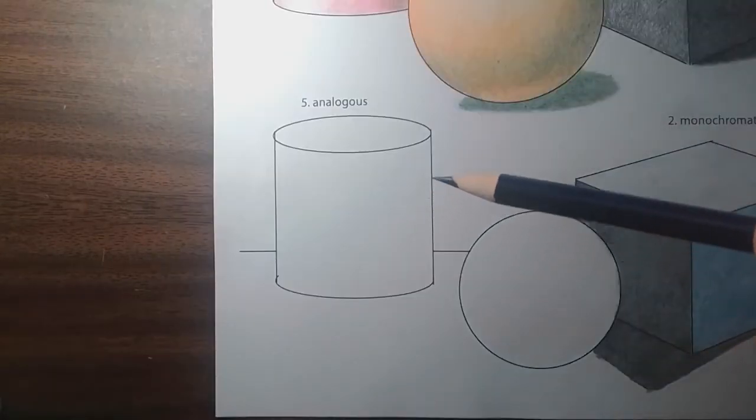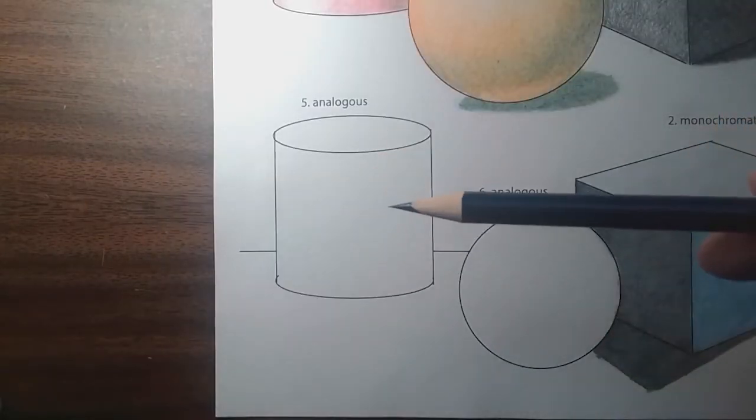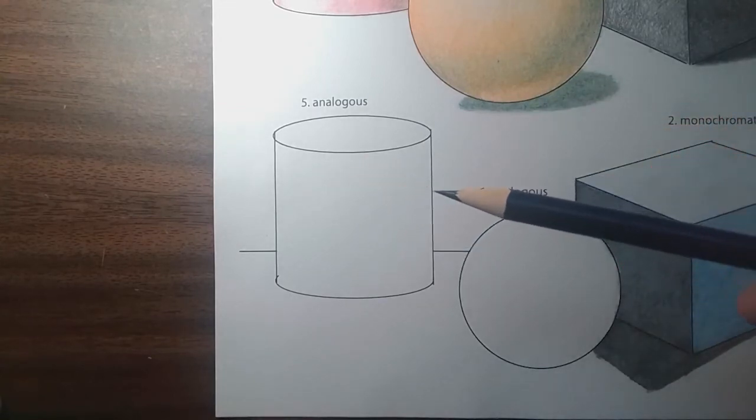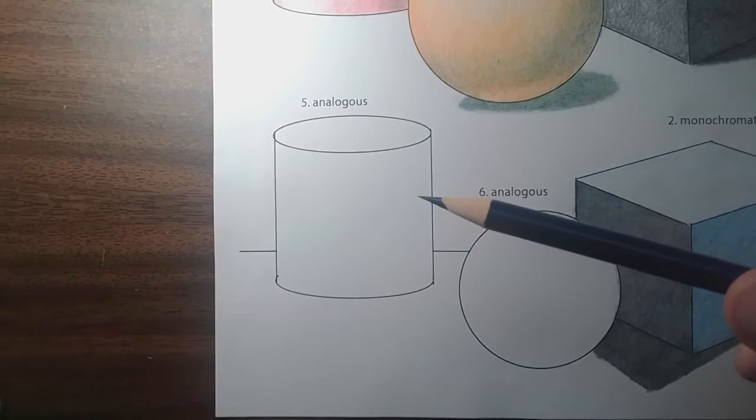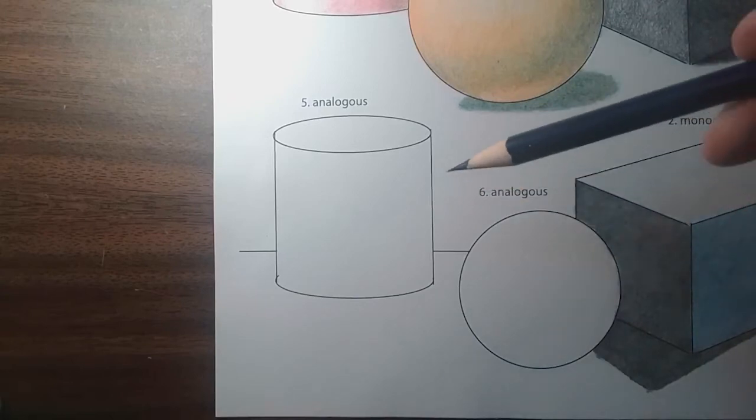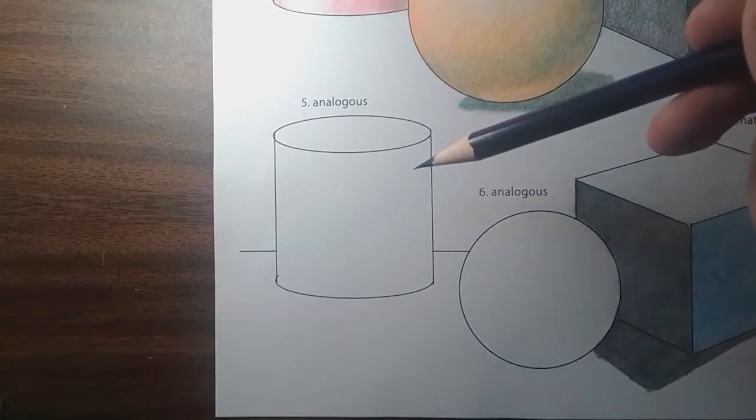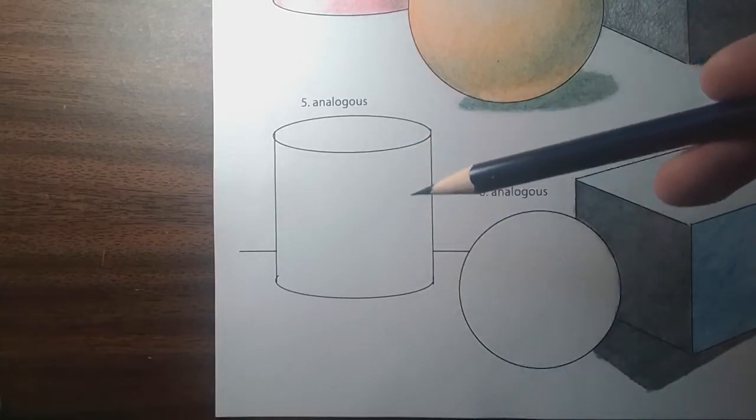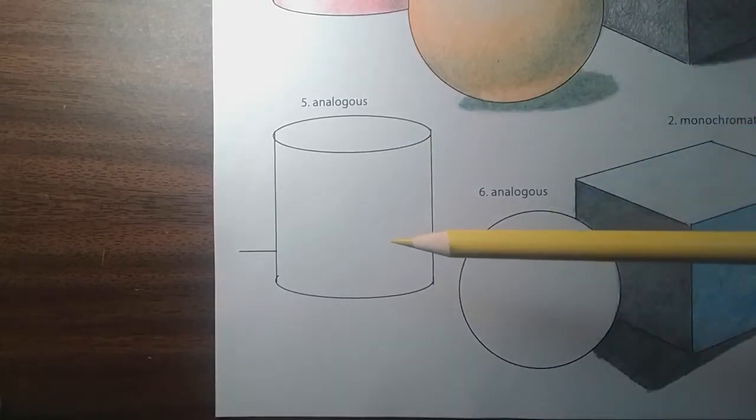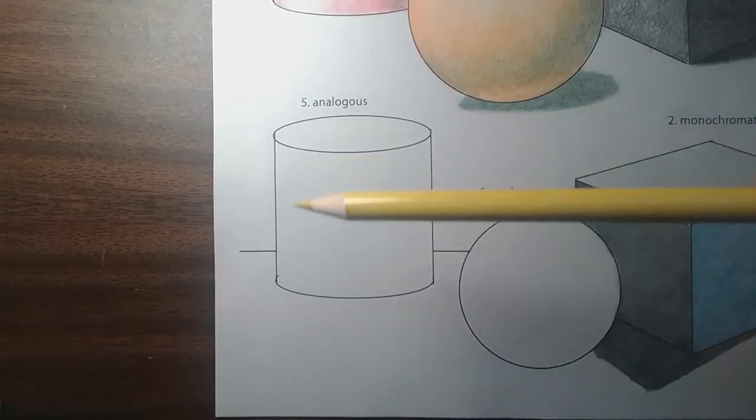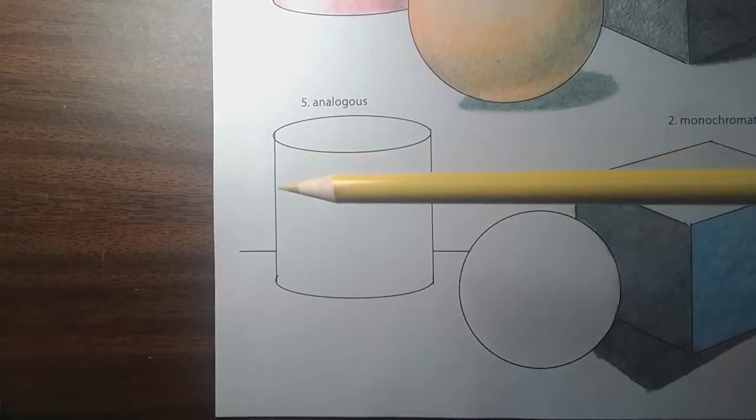I'm going to start with our cylinder here. We went over how to identify the areas of value on a cylinder in our complementary video. With our light source coming in at this angle, our highlight is going to be in this area here, and then we will be moving into our darker tones over at this end of our cylinder, which will be that blue range.